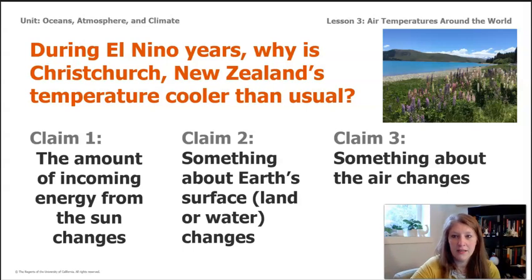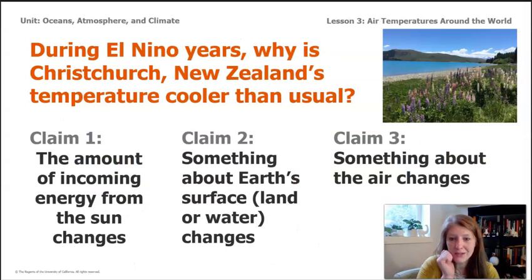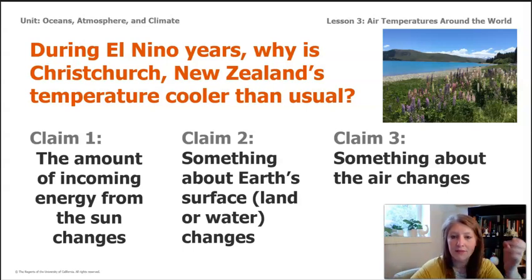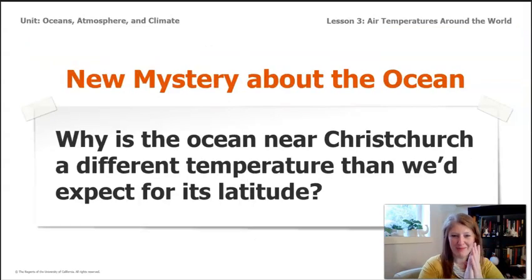Looking at this, I realize that claim one is not supported by the data. The data Kitty Parada sent about the amount of energy received from the sun in a normal year and an El Niño year remains the same, which means we can eliminate claim one. When we first wondered whether the amount of energy from the sun might be changing, it's pretty clear it's not. So we're left with questions about the air or the surface. Now we have a new mystery: why is the ocean near Christchurch a different temperature than we'd expect for its latitude?